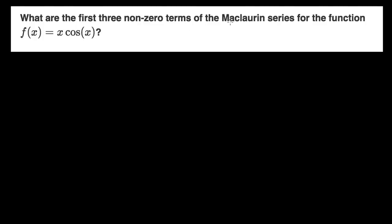What are the first three non-zero terms of the Maclaurin series for the function f of x equals x cosine of x? Let's remind ourselves what a Maclaurin series looks like. Our f of x can be approximated by a polynomial — we evaluate f at zero, that's why it's a Maclaurin series, it's centered at zero. It's a Taylor series centered at zero.